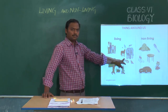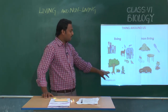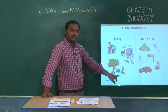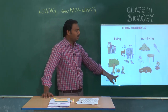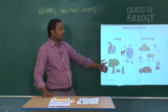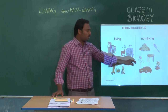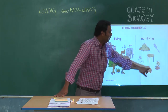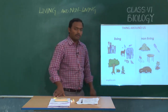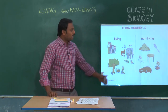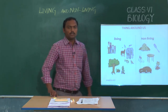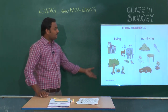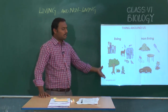Human beings, animals, and plants all come under the living things category. And what things can we consider as non-living things? Things like rocks, tables, and vehicles are considered non-living things.